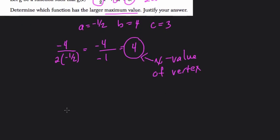Okay, so g(4), right? We're plugging in 4 for x. Negative one-half times x squared, so 16, that's 4 squared, plus 4 times 4, plus 3. And to simplify this...